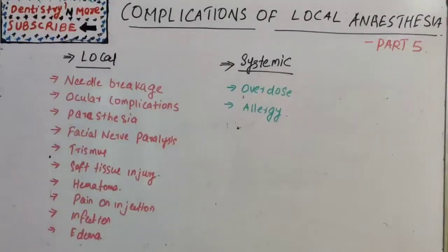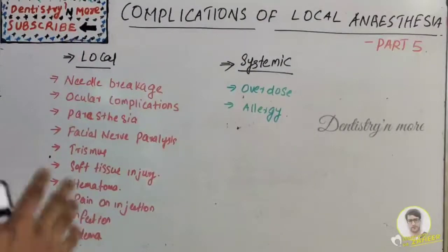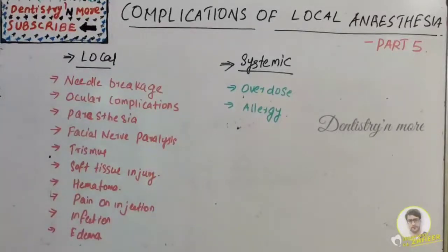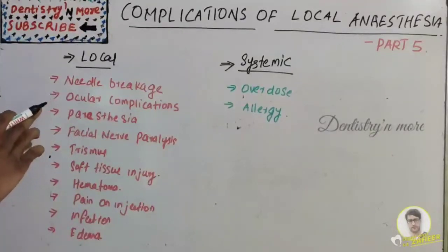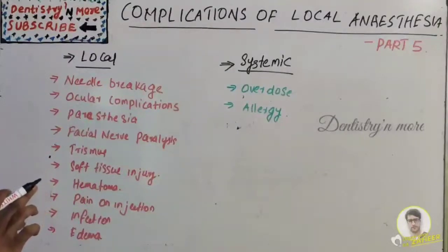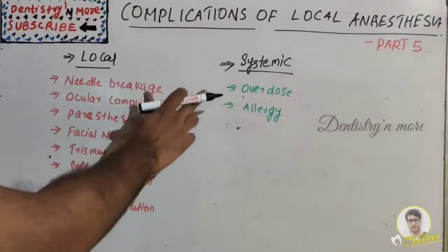Welcome back to another session in Dentistry and More. Today's topic in local anesthesia is complications — local complications and systemic complications. This is part 5 of our local anesthesia sessions. Local complications include needle breakage, ocular complications, paresthesia, facial nerve paralysis, trismus, soft tissue injury, hematoma, pain on injection, infection, and edema.